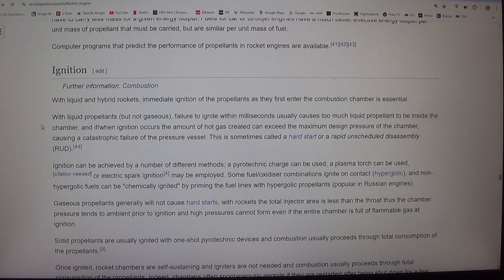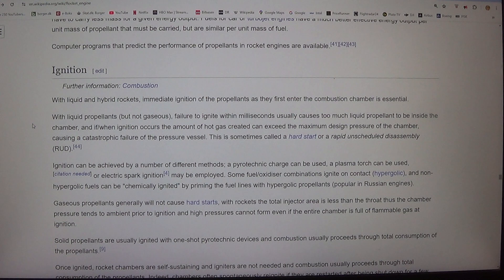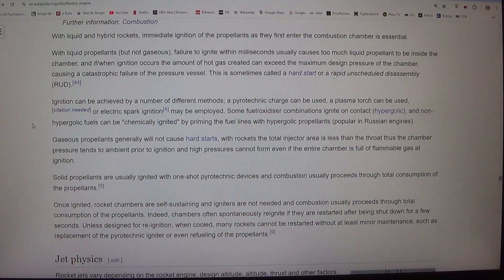Ignition. With liquid and hybrid rockets, immediate ignition of the propellants as they first enter the combustion chamber is essential. With liquid propellants, but not gaseous, failure to ignite within milliseconds usually causes too much liquid propellant to be inside the chamber, and if/when ignition occurs, the amount of hot gas created can exceed the maximum design pressure of the chamber, causing a catastrophic failure of the pressure vessel. This is sometimes called a hard start or a rapid unscheduled disassembly (RUD).